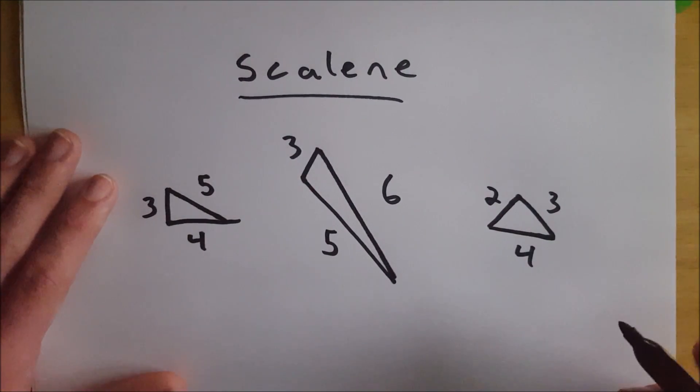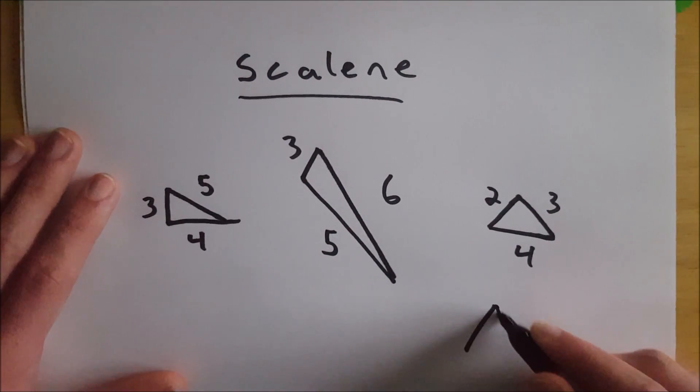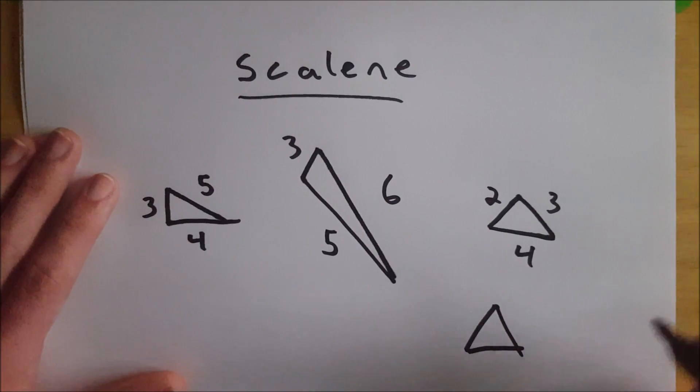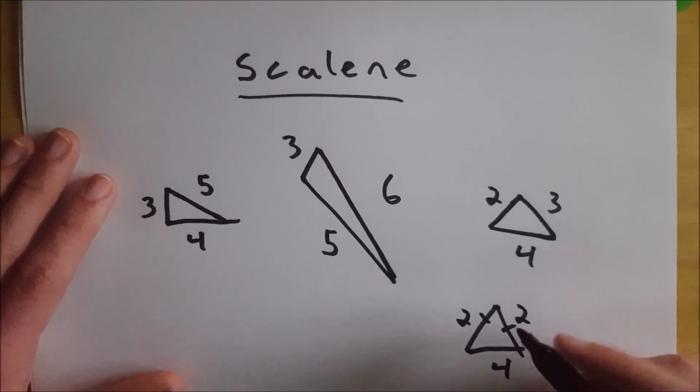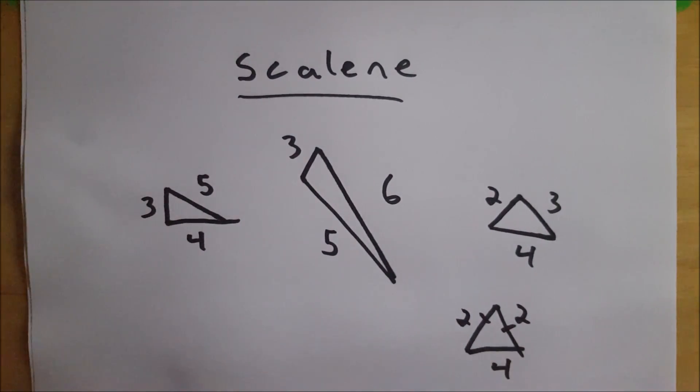So as you see, a scalene triangle is just a triangle such that none of these sides are congruent. So, this triangle here, let's say this one is 2, and this one's 4, this one's 2. Not scalene, because these two sides are congruent, and therefore it is an isosceles triangle.